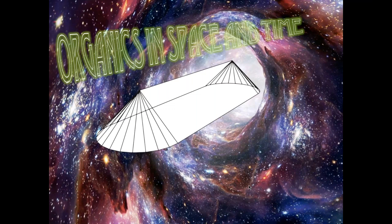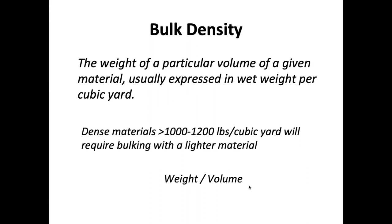Now I'll talk about managing organics in space and time. On the space side of the space-and-time equation, it's key to understand bulk density — the weight of a particular volume of material. We often talk in tons of food scraps diverted, but what does a ton look like in space? We have to convert it to volume, and that's true for almost any material. In general, food scraps have a bulk density of roughly around 1,000 pounds per cubic yard.